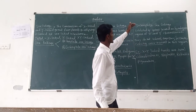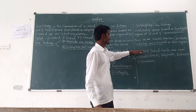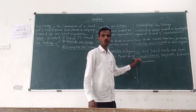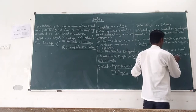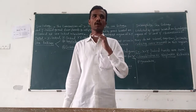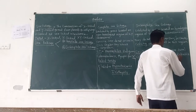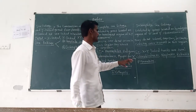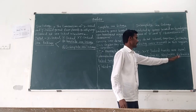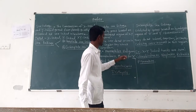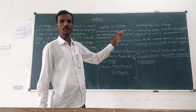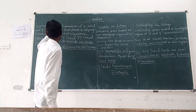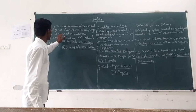In incomplete sex linkage, crossing over does occur in the homologous regions of the X and Y chromosomes. Retinitis pigmentosa is a common example of incomplete sex-linked inheritance. The key difference between complete and incomplete sex linkage is used to define sex linkage and sex-linked inheritance.